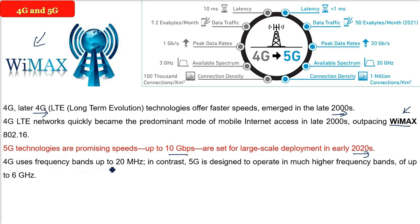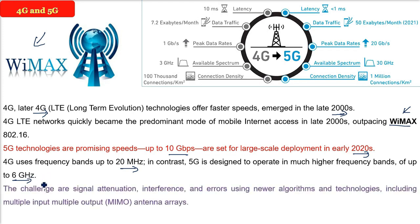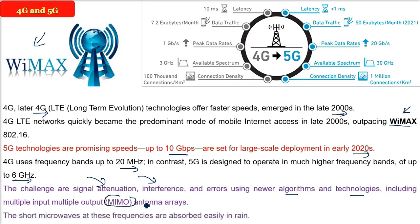4G uses frequency bands up to 20 MHz, but 5G is designed to operate in much higher frequency ranges up to 6 GHz. High frequency means a lot of attenuation and interference. Because of this, new algorithms and technologies like MIMO (Multiple Input Multiple Output) antenna arrays have been developed. Short microwaves in this frequency range are easily absorbed by rain, which is one of the challenges designers are working on.